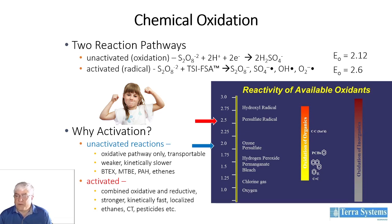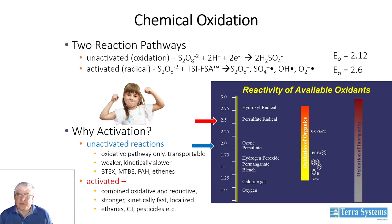Well, when you react with compounds, the unactivated materials have only a certain energy associated with them — they can only break bonds in certain compounds. For example, bleach. You can react bleach with simple chemicals: the unsaturated compounds, the chlorinated ethene compounds, and some of the petroleum hydrocarbons. But when you get into the more reactive, more recalcitrant materials — the saturated compounds, the chlorinated ethanes — they're non-reactive to unactivated oxidants and you need something stronger.